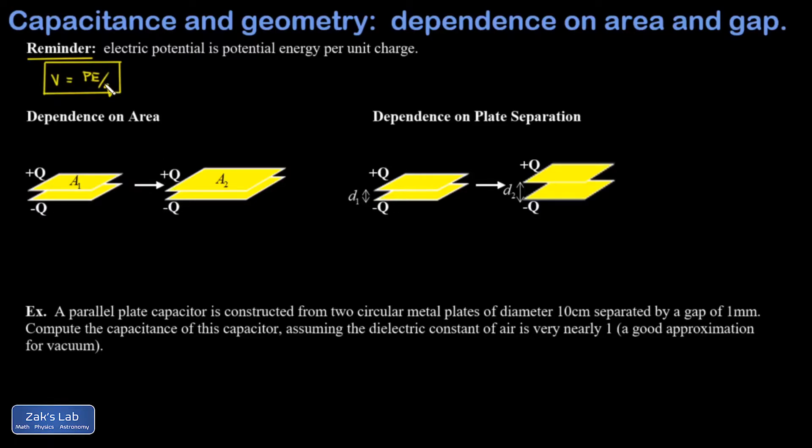As we change the geometry of the capacitor we're going to keep track of how the total potential energy changes, and therefore we can tell how the voltage changes and we should be able to get the dependence of the capacitance on the geometry. So in the experiment we're looking at, we've charged the capacitor and then disconnected it from a battery, which means that the charge is now fixed on these plates. That's never going to change as we modify this capacitor.